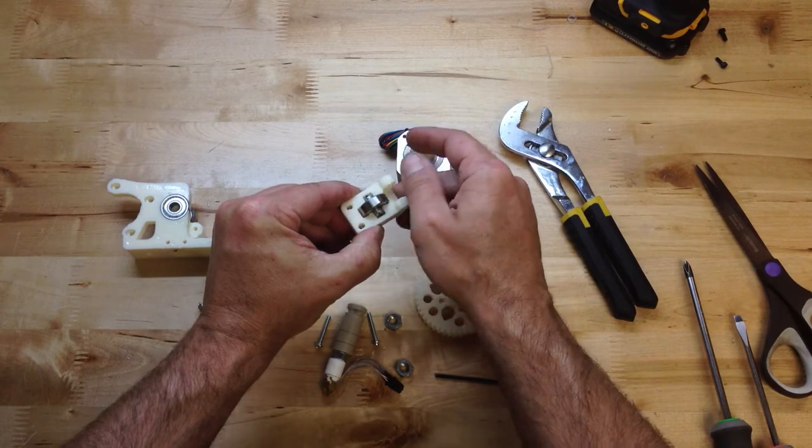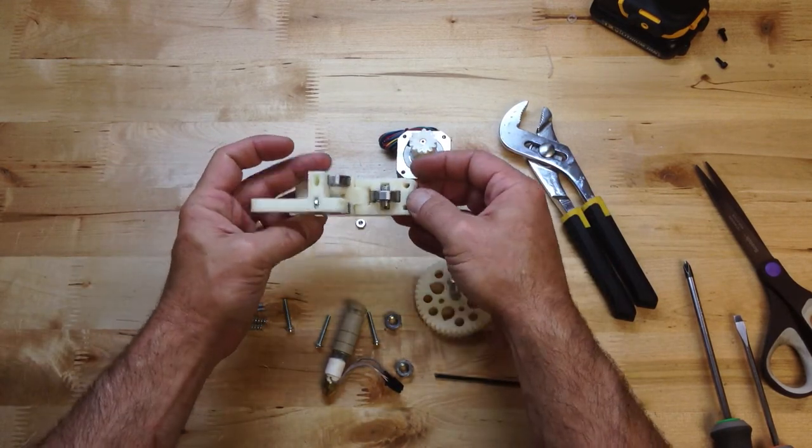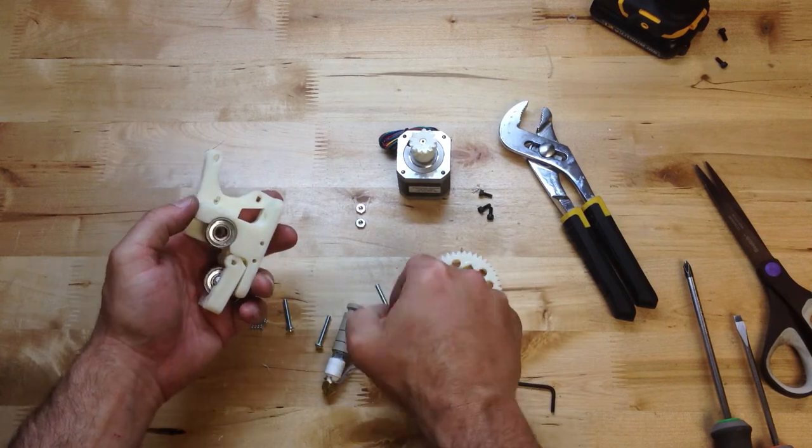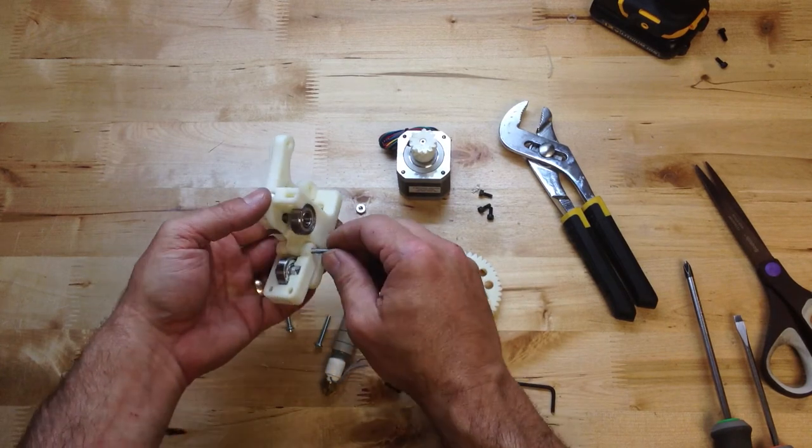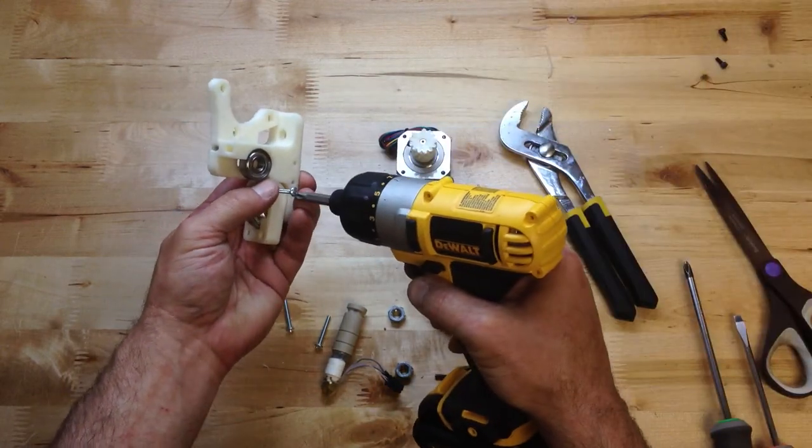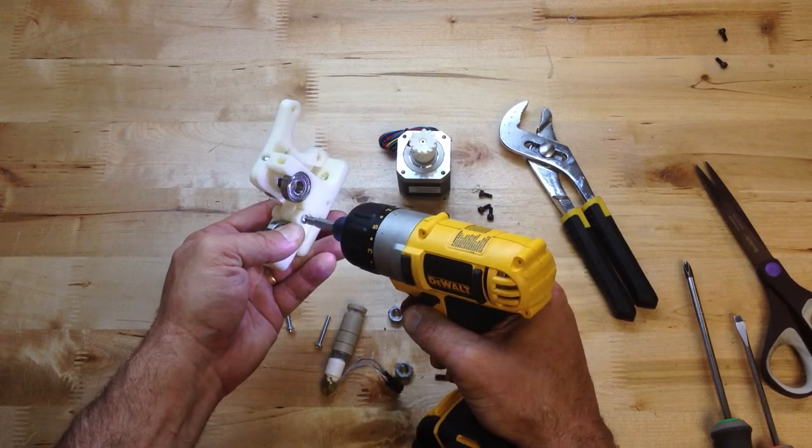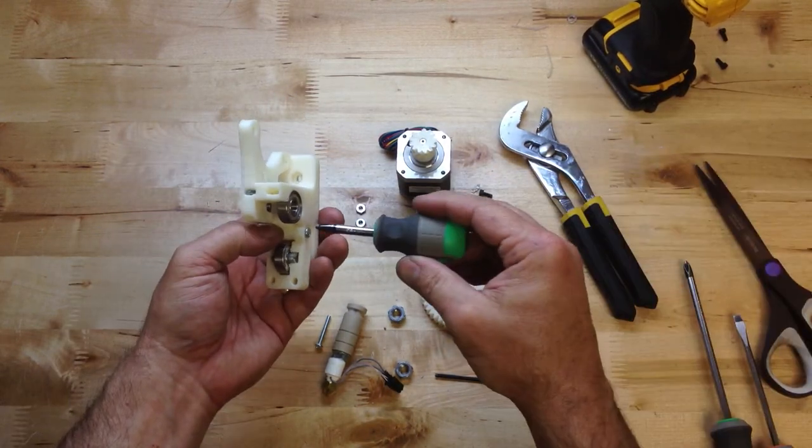This needs to spin. Okay, one inch bolt goes in from this side. Do not over tighten.